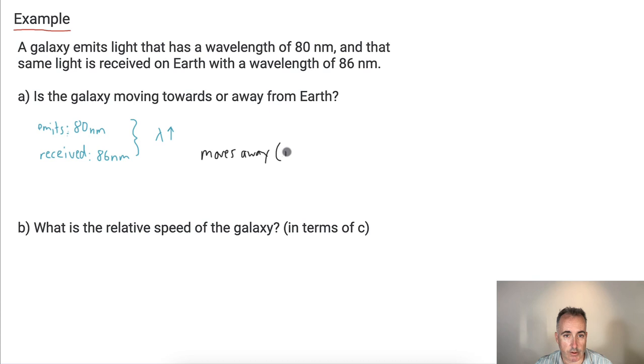So this is what we can say, it moves away. We can say it's red shift. And that's because the wavelength got bigger. So the lambda went up, so therefore it must have been moving away.